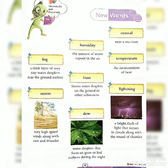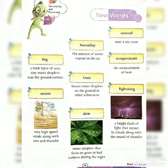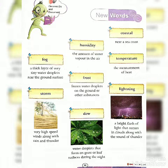New words. Coastal — near a sea coast. Humidity — the amount of water vapor in the air. Fog — a thick layer of very tiny water droplets near the ground surface. Frost — frozen water droplets on the ground or other substances.